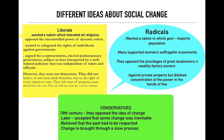The liberals opposed the uncontrolled power of dynastic rulers. In a monarchy, the king's son becomes the next king — power shifts within one family generation after generation. The liberals were against this system. They wanted to safeguard the rights of individuals against the government, meaning individuals should have rights. They argued for a representative, elected parliamentary government, subject to laws interpreted by a well-trained judiciary that was independent of rulers and officials.